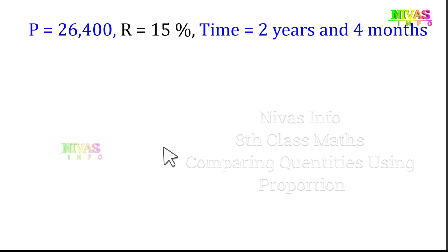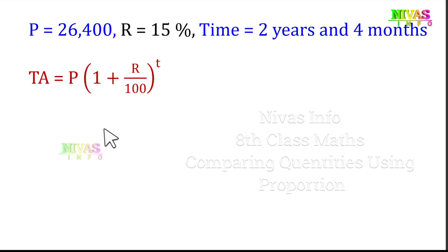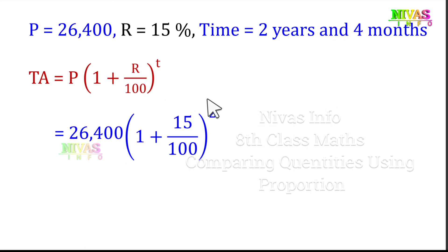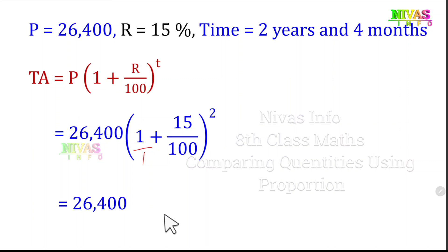Since the period is 2 years and 4 months, we first find the amount at the end of 2 years using compound interest. Principal P is 26,400, rate R is 15%, T is 2. The compound amount equals 26,400 into 1 plus 15 by 100, whole power 2, which simplifies to 26,400 into 115 by 100, squared.